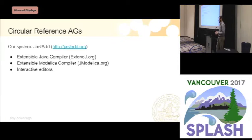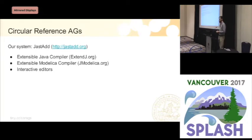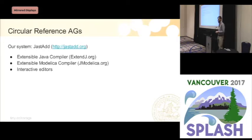We are working with a system called Justad. This system has been around for a long time and we've developed several compilers using it. Third parties have also developed compilers using our tool. Examples of projects built with Justad include ExtendJ, an extensible Java compiler, and a Modelica compiler called JModelica. We've also made a few interactive editors with Justad.